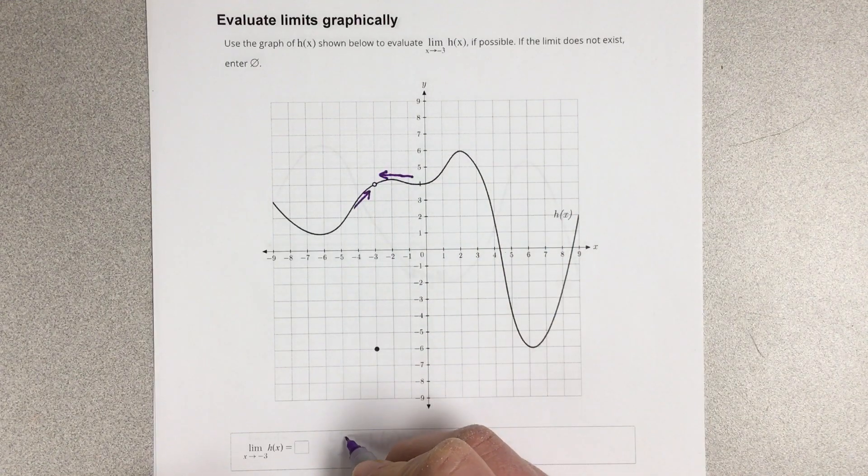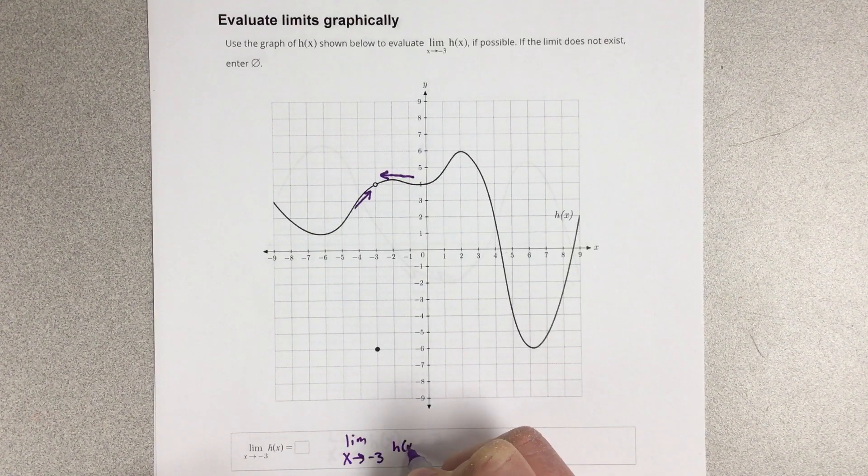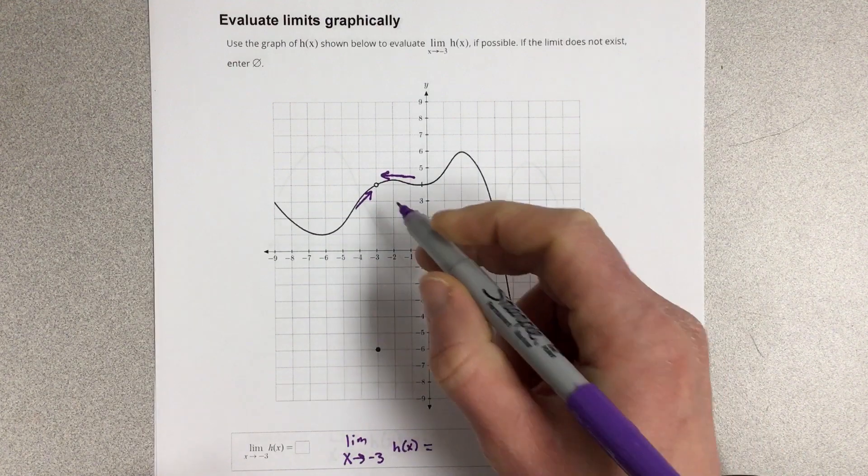So our limit as x approaches negative 3 for h of x is equal to 4.